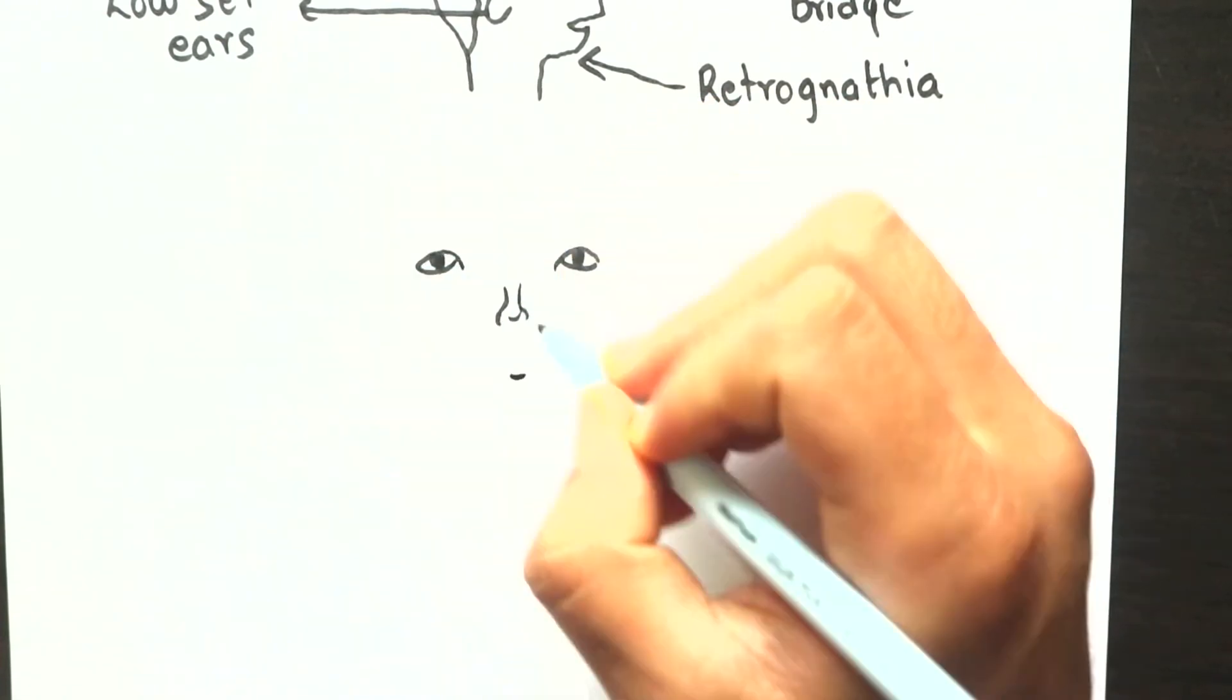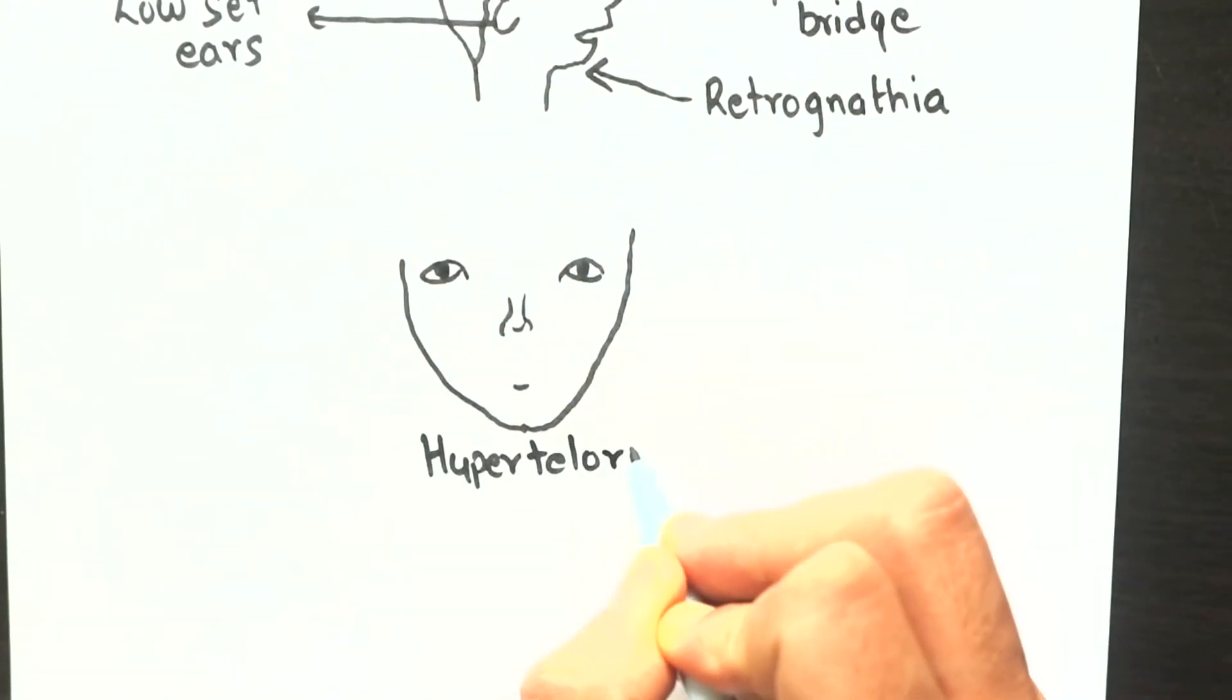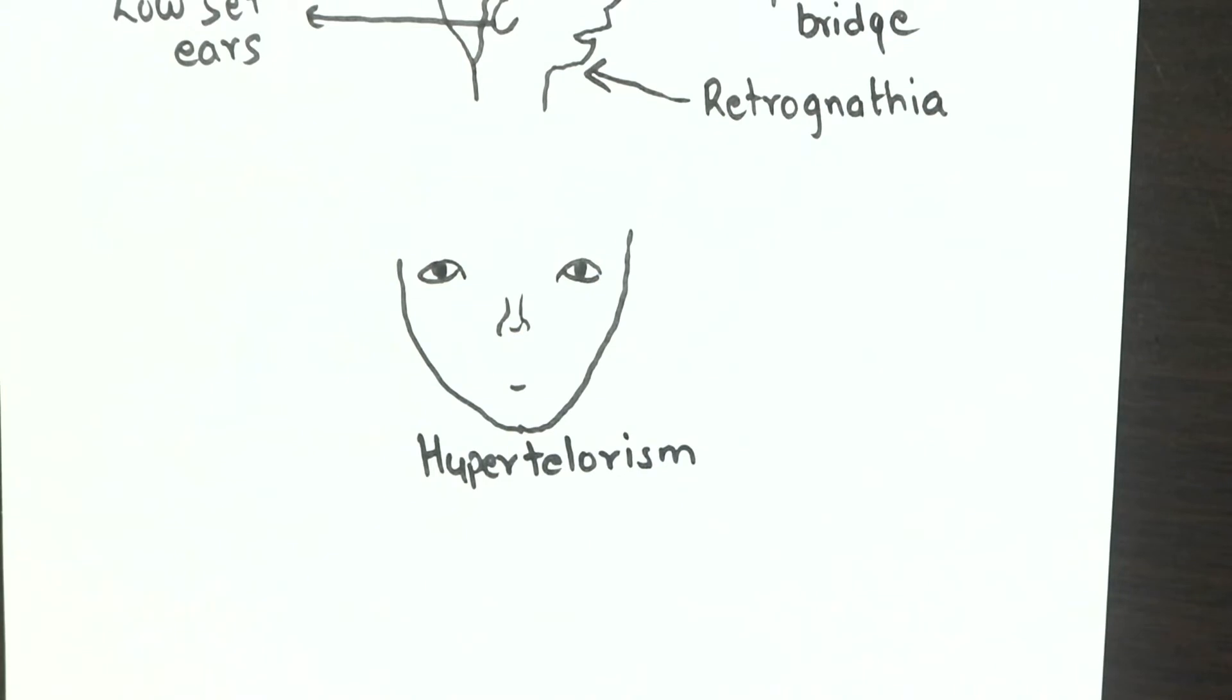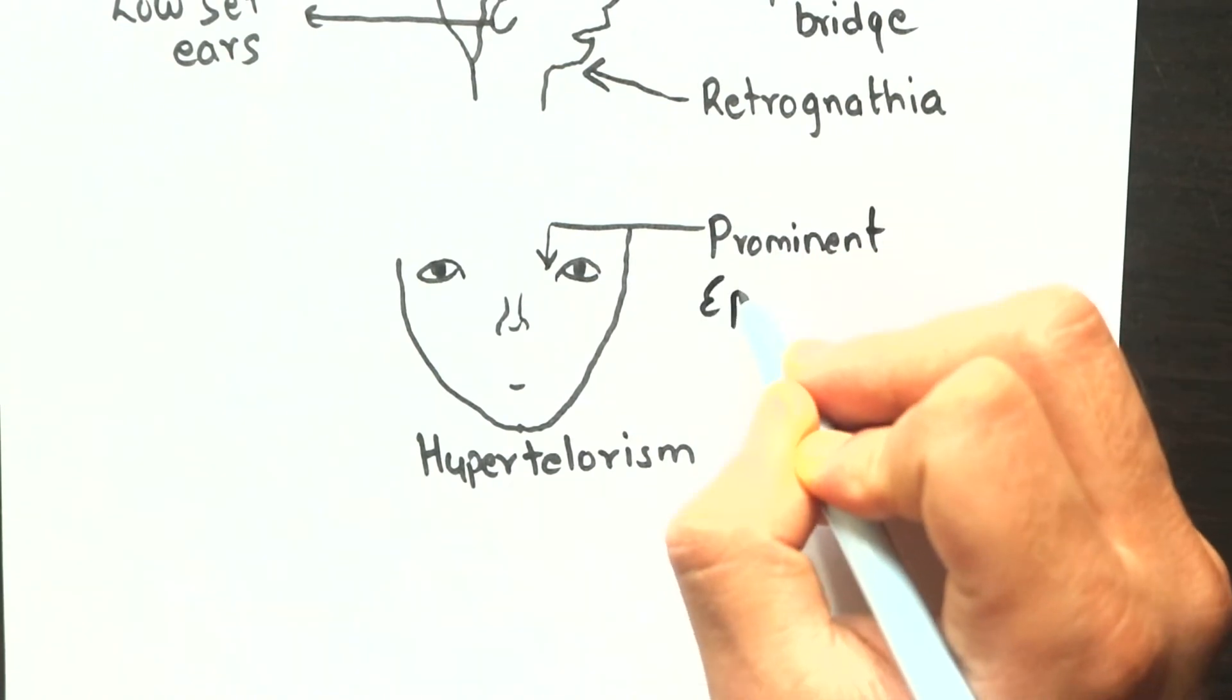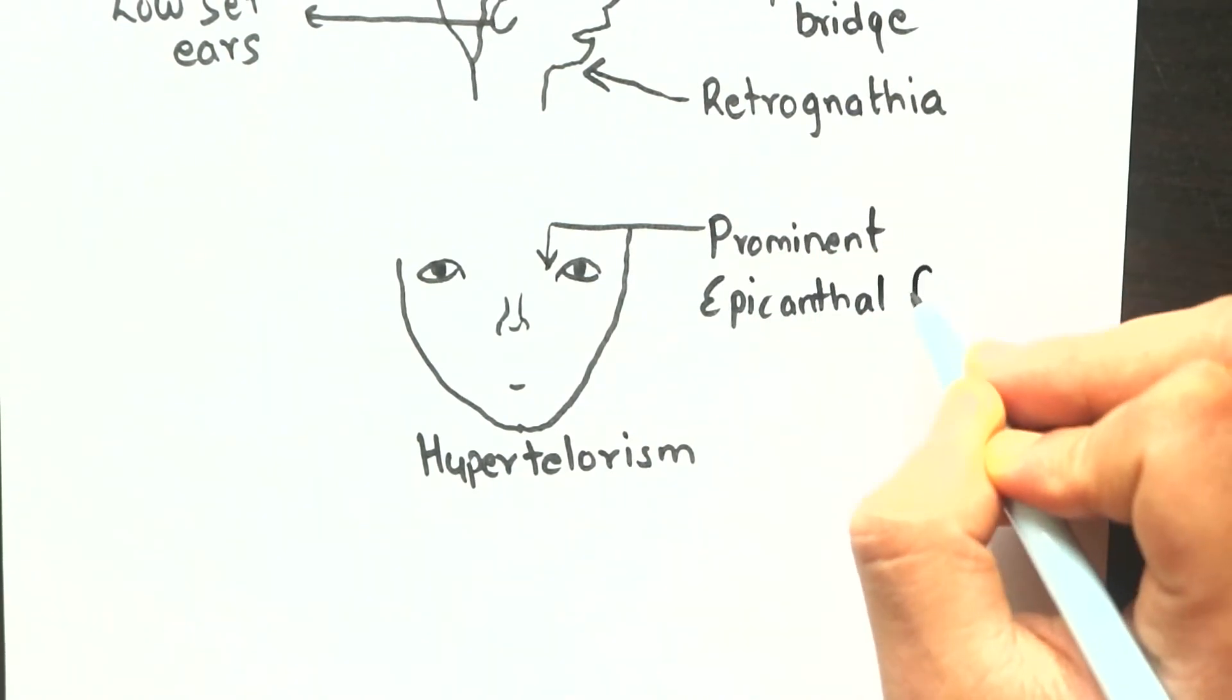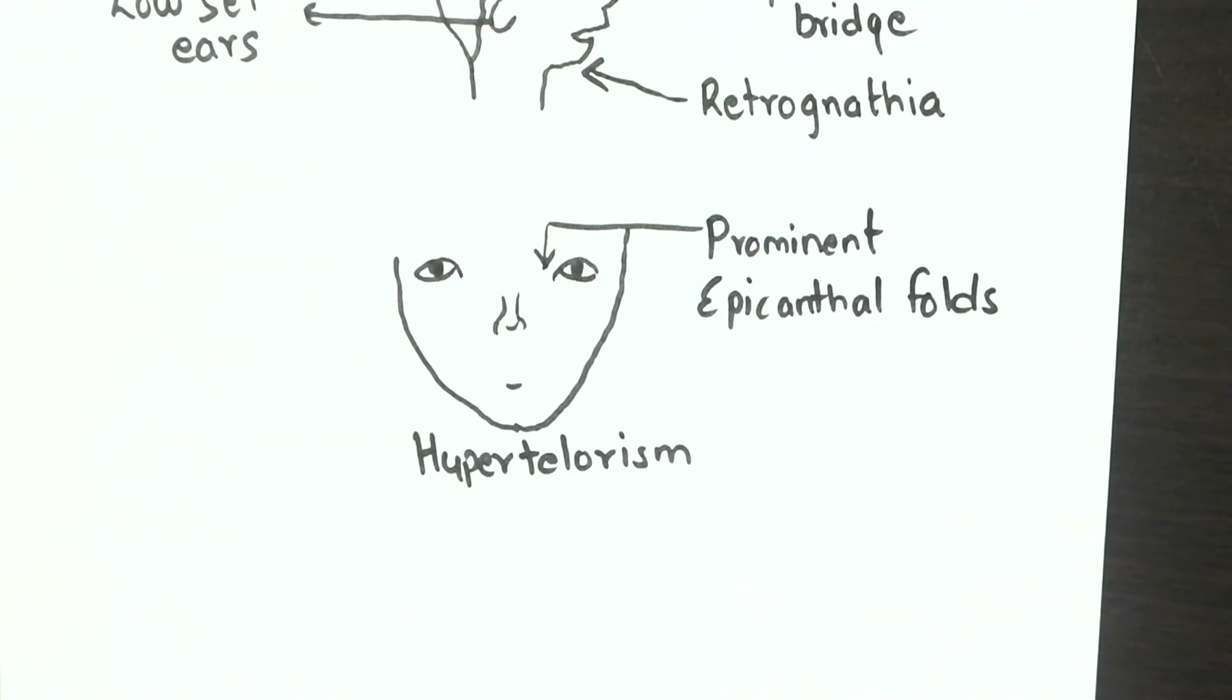Eyes are spaced further apart than normal, also known as hypertelorism. Prominent epicanthal folds, which are abnormally prominent skin folds in the inner corners of the eyes, can be seen. This collection of facial features is sometimes referred to as Potter facies.